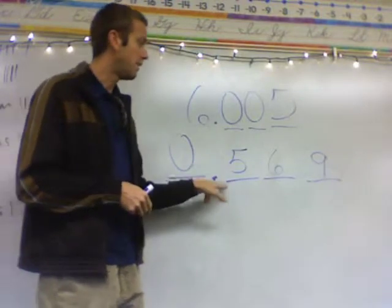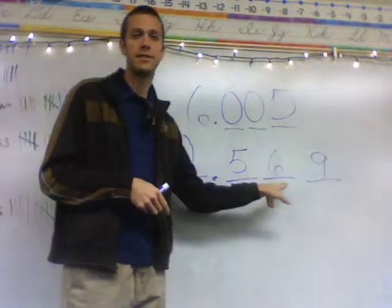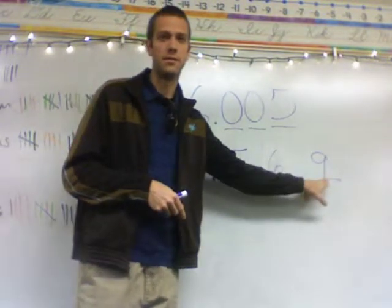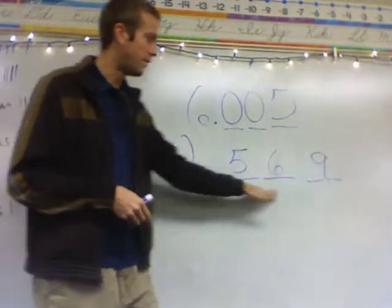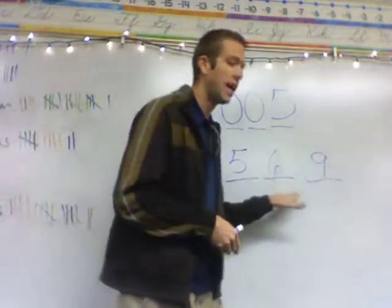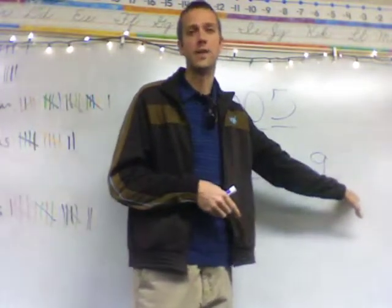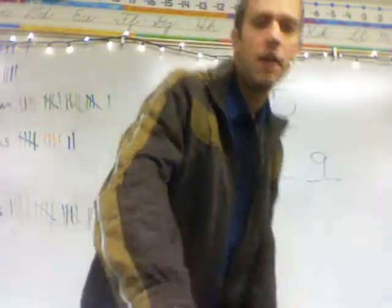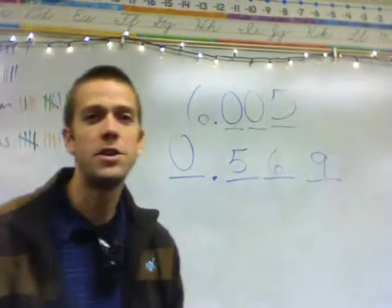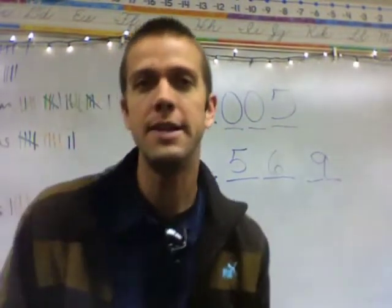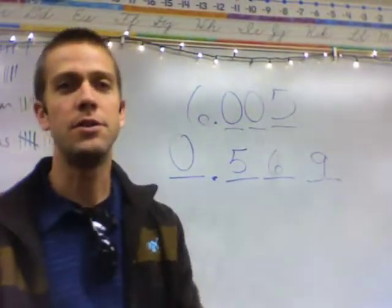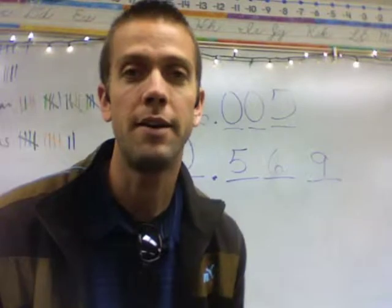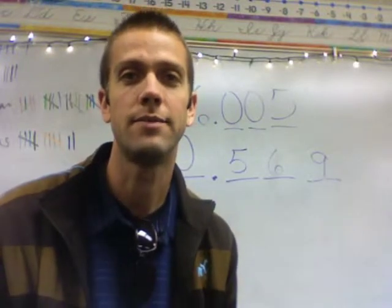You don't say 'fifty-six hundredths and nine.' No. Five hundred sixty-nine, and it ends in the thousandths. If you have any questions about naming decimal numbers and using the right vocabulary, go ahead and talk to me and I would be glad to help. Thanks.